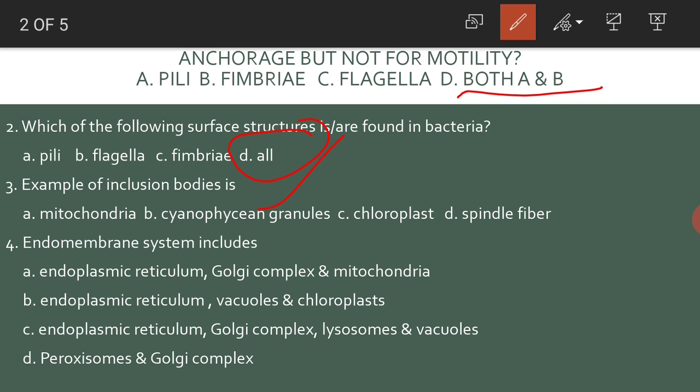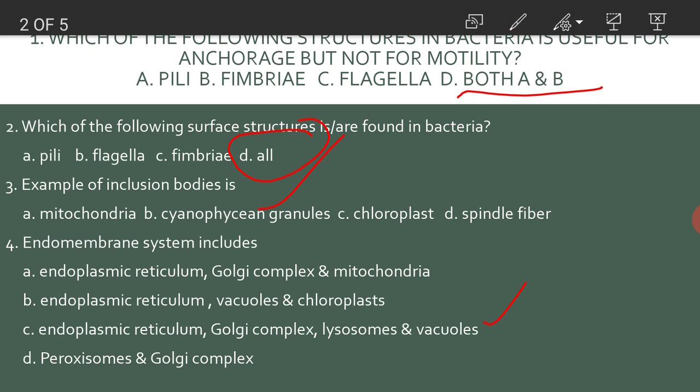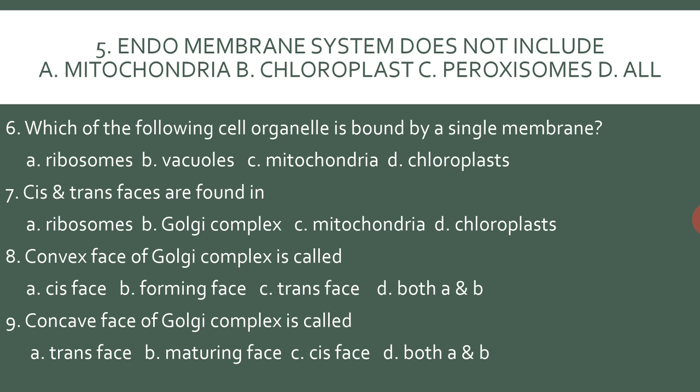The endomembrane system includes endoplasmic reticulum, Golgi complex, lysosomes, and vacuoles. The endomembrane system does not include mitochondria, chloroplast, or peroxisome.